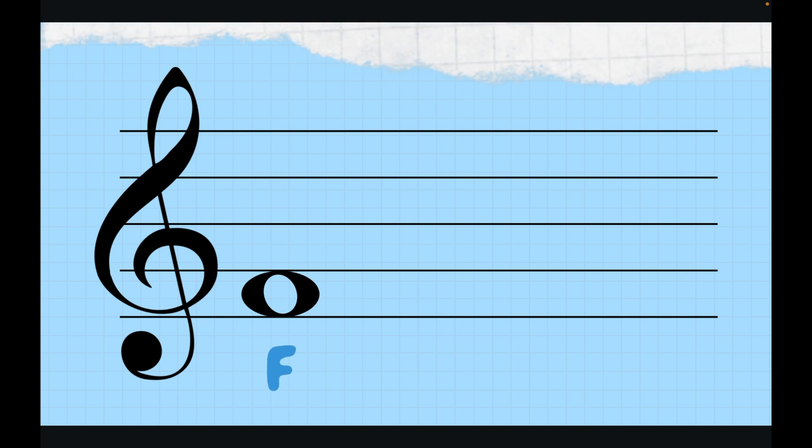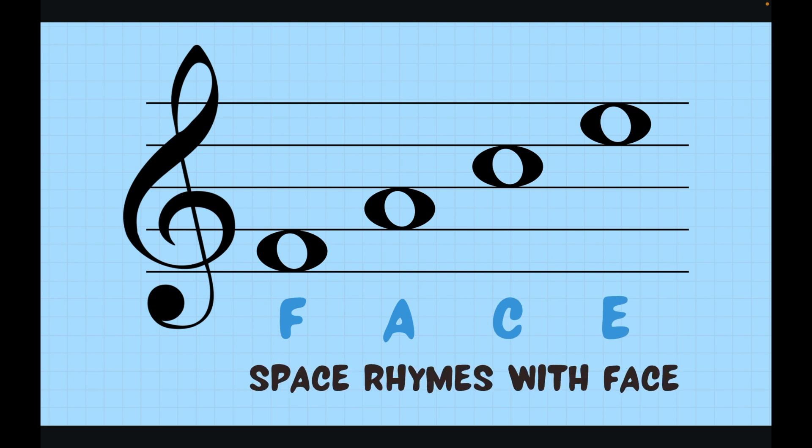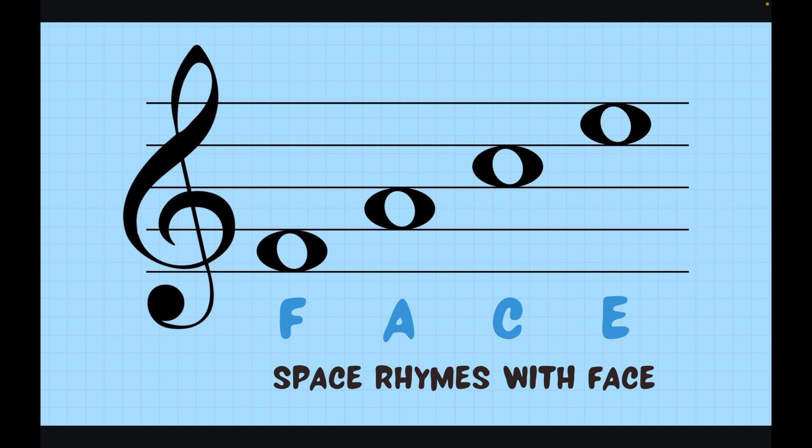Our first note is the note F, then we have A, then we have C, and then we have the note E. If you notice at the bottom it might spell something out. Our thing to help us remember is space rhymes with face. This is the only one of all the lines and spaces of all the clefs that spells out a word.